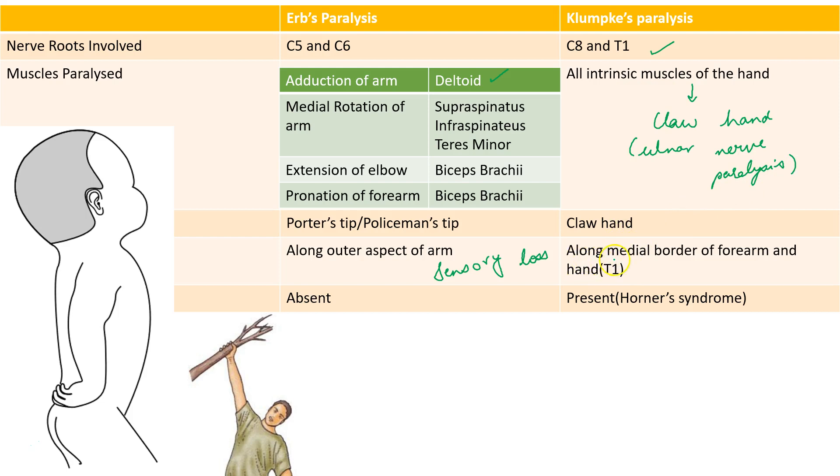There is sensory loss along the medial border of forearm and hand. And there will be Horner's syndrome, which is characterized by ptosis, miosis, anhydrosis and enophthalmos.